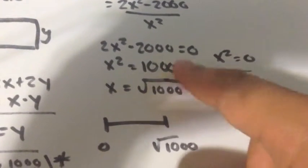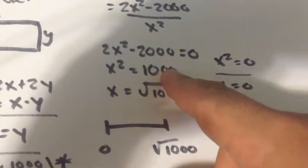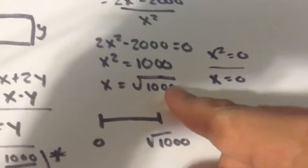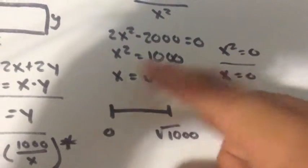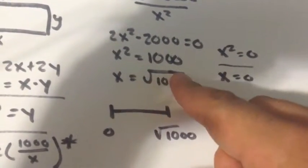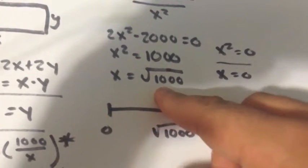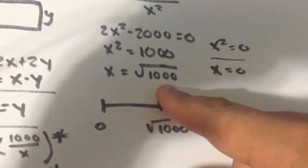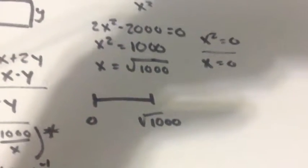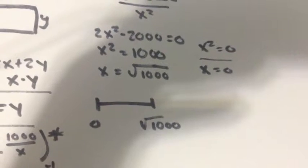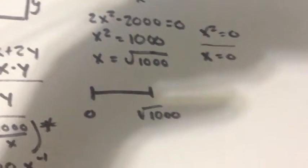So the critical numbers would be 2x squared minus 2000 equals 0. And so you just solve it. So x squared equals 1000. To get rid of that, you square root it. So x equals square root of 1000. And so unfortunately that's not a nice whole number. So I'm just going to leave it like that.